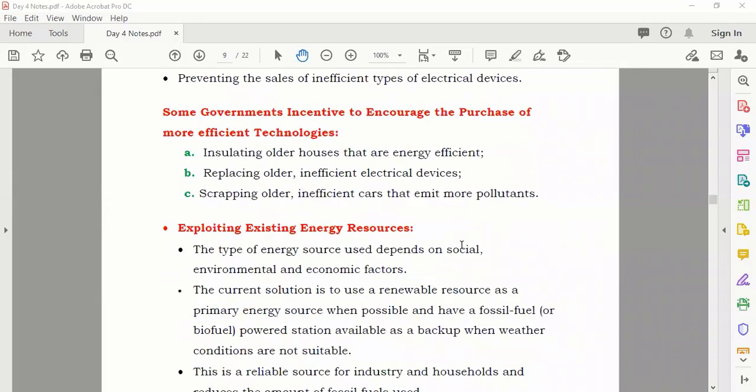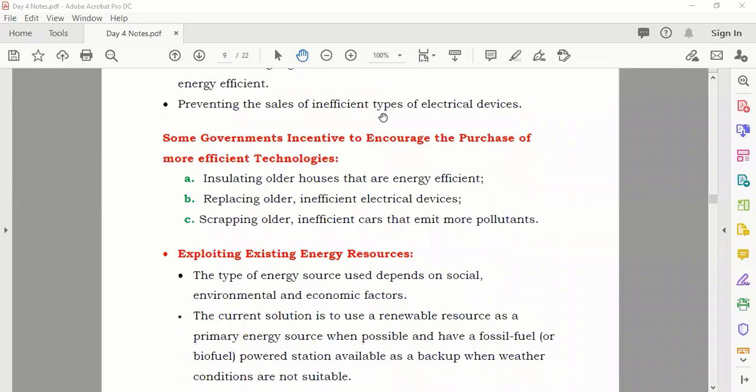Government things they have to do: number one, insulating older houses. If anyone has an old house, the government should insulate it if the person cannot do it to save energy. Replace older, inefficient electrical devices. Scrapping older ones, even cars, because they are producing more pollution.